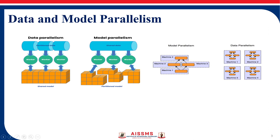Second, we have model parallelism. This is a machine learning approach for distributing a neural network model over several computers or computing devices. The neural network model parameters are divided across several machines, enabling each machine to process a piece of input data and determine the appropriate output. The input data is often divided among several computers, with each unit processing a portion of the data, and the result is created by combining the output from each machine.